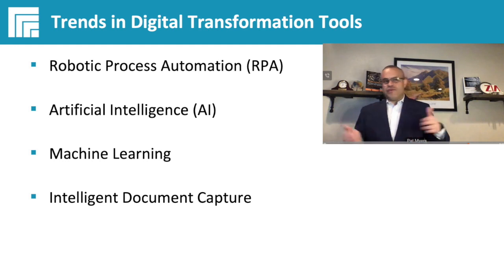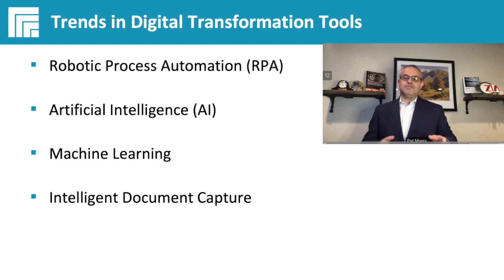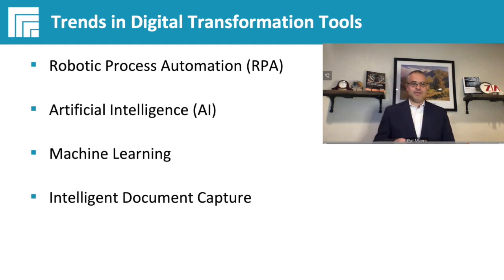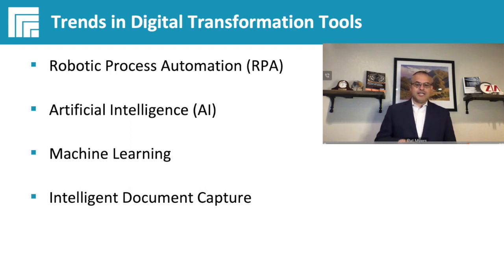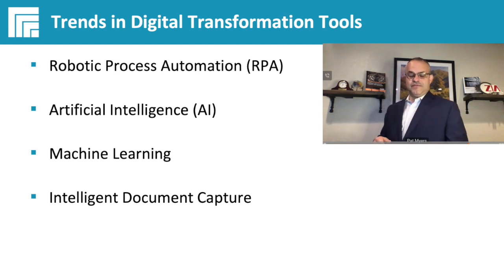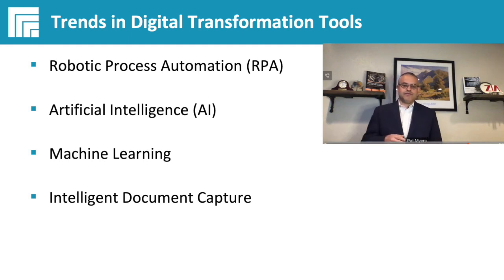Moving to the handshake between ML and AI: machine learning is a subset of AI, where the process involves teaching the computer system to make accurate predictions from data. But why we're here today is to talk about intelligent document capture, which is a process of identifying and extracting information from documents. So how does that drive those different processes?